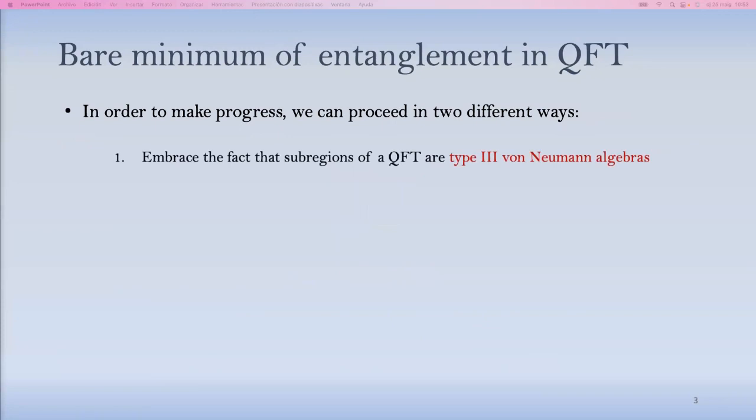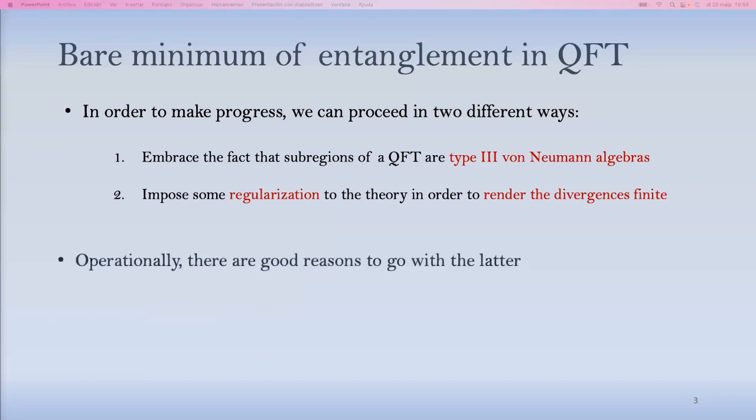Now, once you're faced with that problem, there are basically two things or two big directions you could pursue. The first is to embrace the fact that sub-regions of a QFT are a type III von Neumann algebra, and you talk about things that are well-defined in that sense. So no more tensor products, no more partial traces, but still things that quantify entanglement in that setting. We're not going to do that. There have been several new advances in understanding quantum field theory and entanglement through that approach recently, but what we're going to do is something a little bit simpler, which is to impose something like a regularization to the theory that renders the divergences finite, which would be sort of the naive approach from a physicist's point of view.